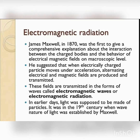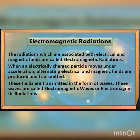Thomson's model was discarded because it could not explain the stability of the atom. Rutherford's model was also rejected on the basis of the discovery of electromagnetic radiation. James Maxwell in 1870 gave a comprehensive explanation about the interaction between charged bodies and the behavior of electric and magnetic fields. He suggested that whenever an electrically charged particle moves under acceleration, alternating electric and magnetic fields are produced, transmitted in the form of electromagnetic waves or electromagnetic radiations, which are associated with electrical and magnetic fields.